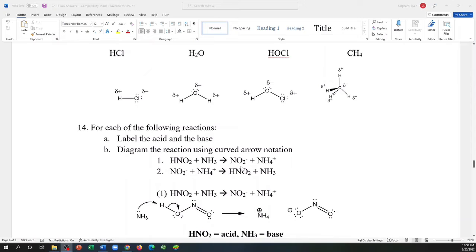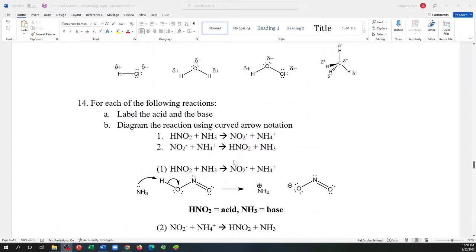Moving on to question number 14, we want to look at two chemical reactions. One is the reaction of nitrous acid with ammonia to form nitrite and ammonium, and then we actually look at the reverse of that reaction. Nitrite and ammonium react to form nitrous acid and ammonia.